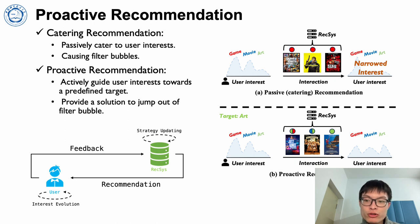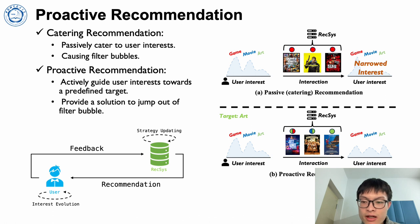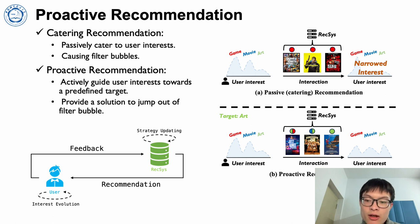Firstly, I will introduce the concept of proactive recommendation and its difference compared to traditional catering recommendation. Traditional catering recommendations continuously learn user interests from historical user feedback and provide items passively catering to the inferred interests, which tends to build filter bubbles, narrowing user interests.